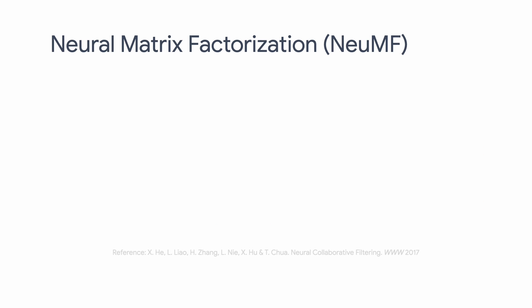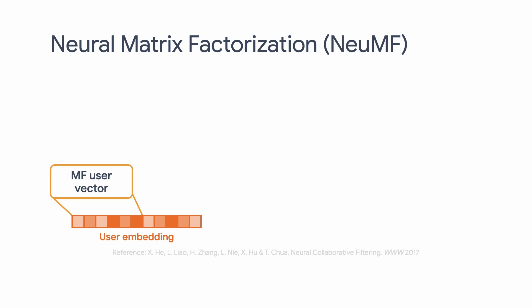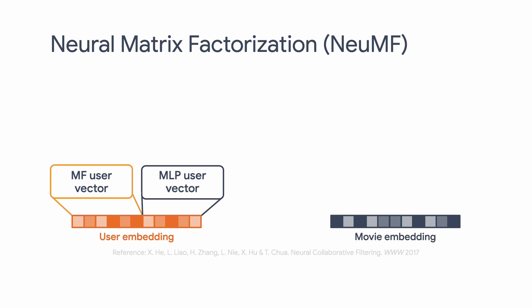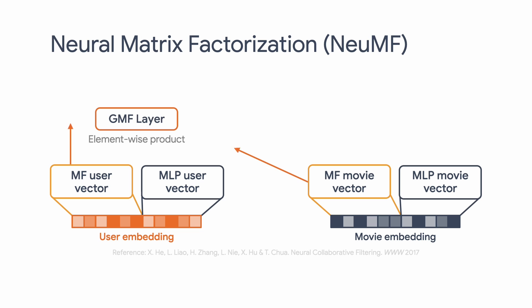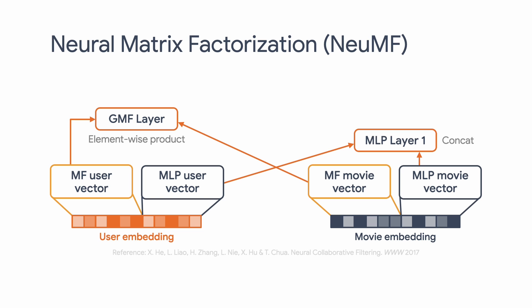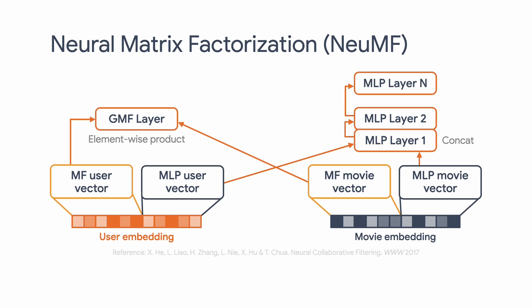We're going to build a classical recommendation model called neural matrix factorization, NeuMF. NeuMF comes out of the 2017 research paper by He and his collaborators, and it is an instantiation of neural collaborative filtering — a general framework for collaborative filtering of recommendations in which a neural network architecture is used to model user-item interactions.